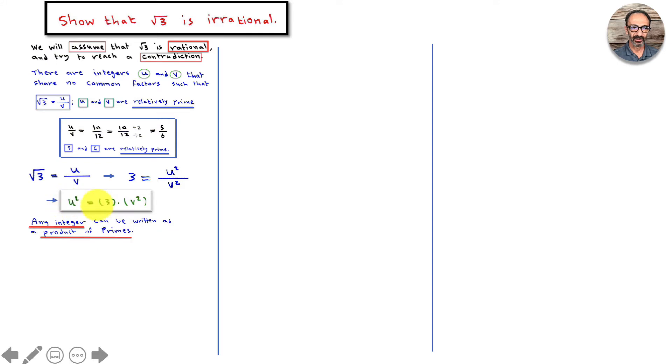Let us look at the prime factorization of u. It could be n primes. We don't know them, so let's call them p1 times p2 times p3 times all the way up to pn. If that is u, then u squared will be that much multiplied by itself.